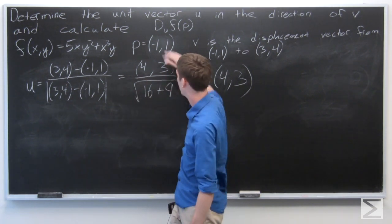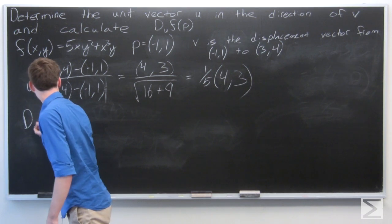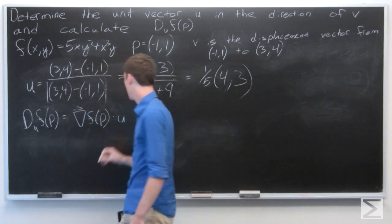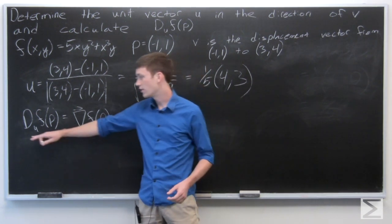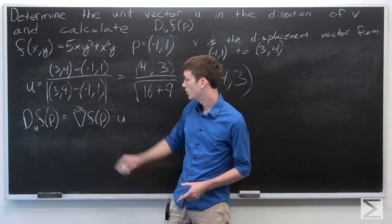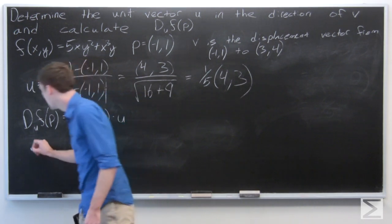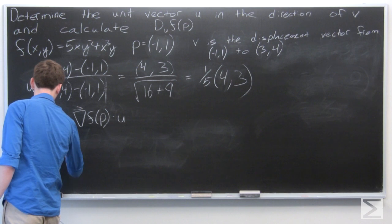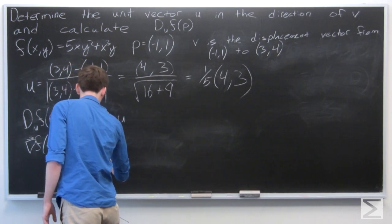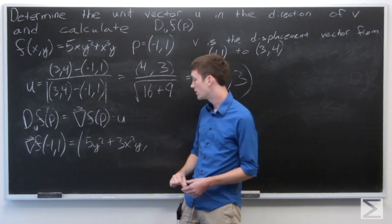Now we want to calculate the directional derivative of f at p in the direction of u. This is equal to the gradient vector of f at p dotted with u. So we want to find the gradient vector of f at p, where our function f is 5xy squared plus x cubed y and our point is negative 1, 1. Taking the partial derivative of f with respect to x, we get 5y squared plus 3x squared y.